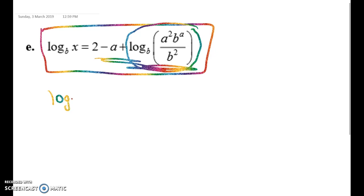Starting on the left hand side, leave the left hand side, we've got 2 minus a plus log to base b. Now I can simplify what's inside the brackets before I get underway. So I've got a squared times b to the power of a minus 2.